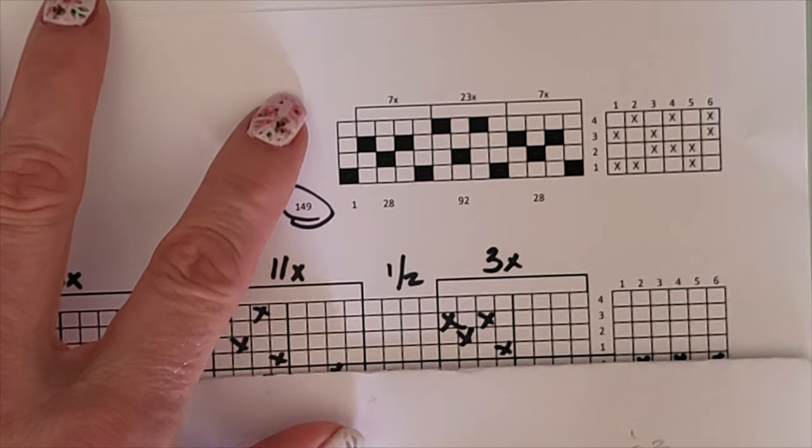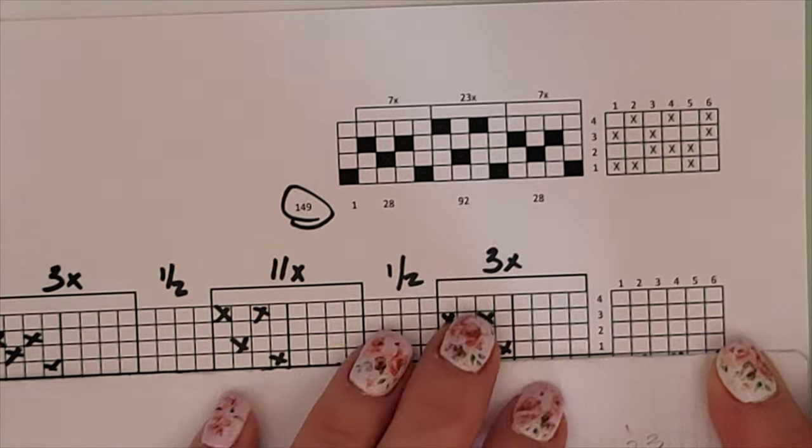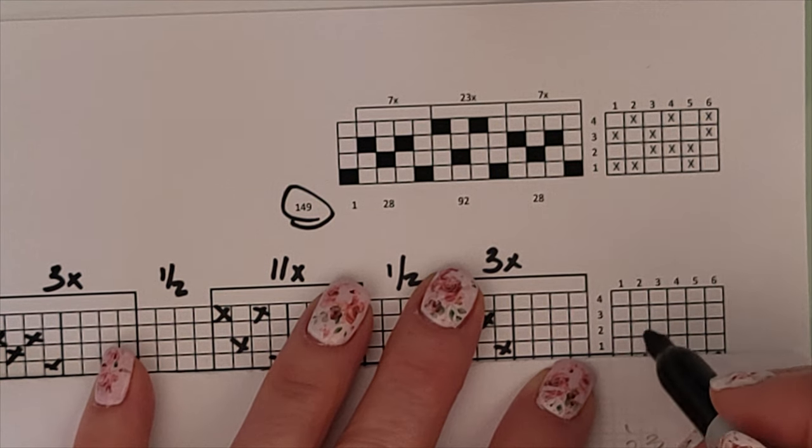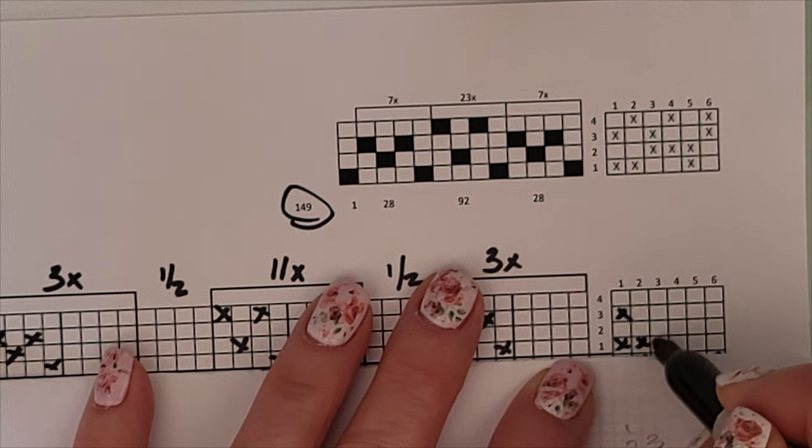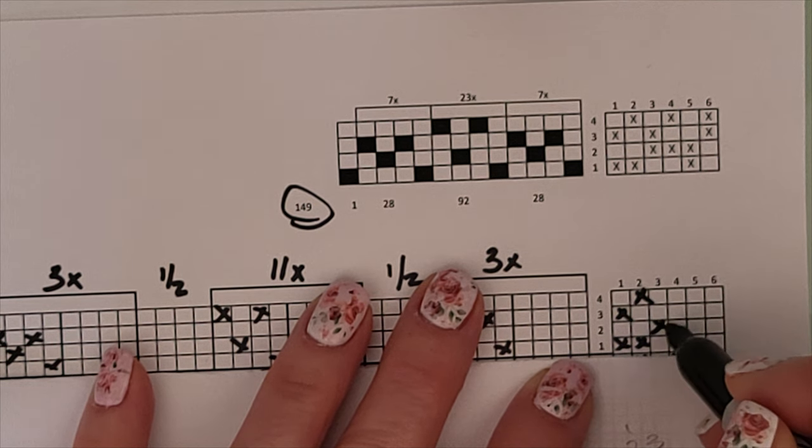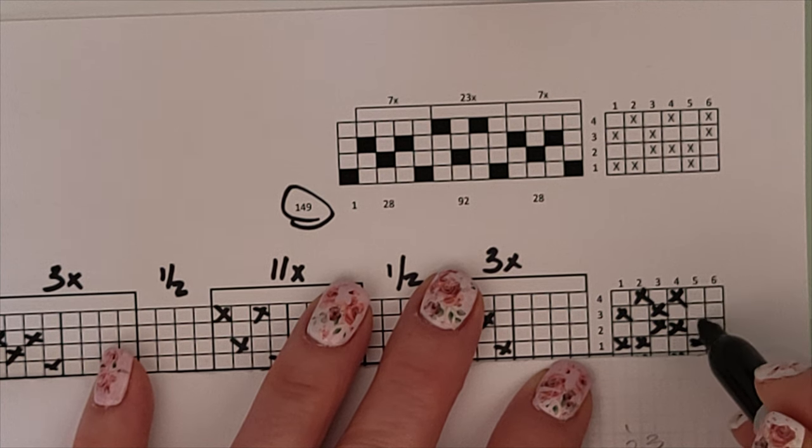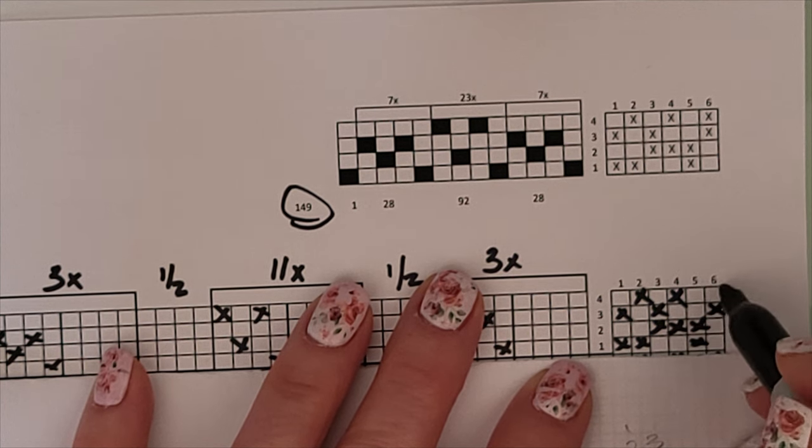Now we move up to the second set of shafts and do the same thing. One, three. One, four. Two, three. Two, four. One, two. And three, four.